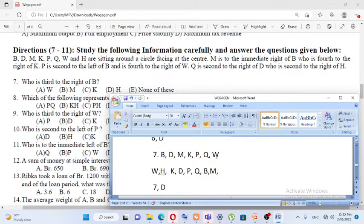M is the immediate right of B. B is to the right of K. K, then two spaces right, to the right is B. P is second to the left of B.